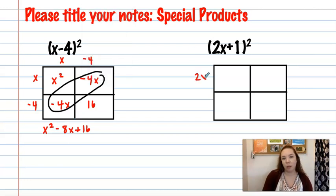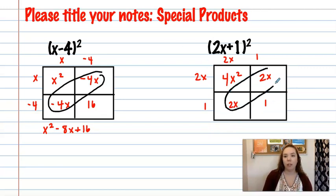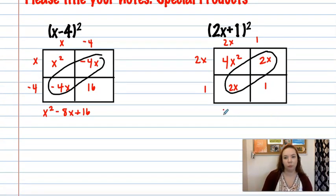So here I'm going to have my 2x plus 1, 2x plus 1. 2x times 2x gives us 4x squared. And we have 2x and 2x and positive 1. So this one would be 4x squared plus 4x plus 1.